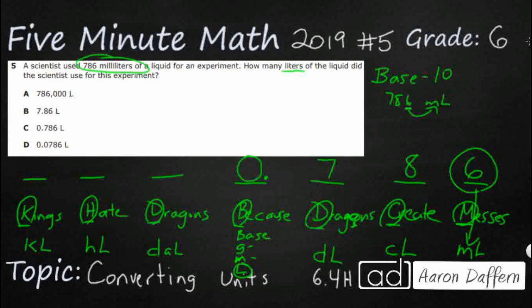Whenever we deal with a ones place and there's something beyond that to the right, we always put a decimal there. So we now move the ones place to right here, to liters, and it looks like we got 0.786 or 786 thousandths. That is going to be our answer.